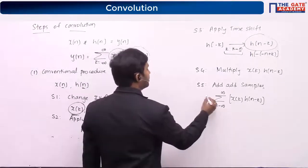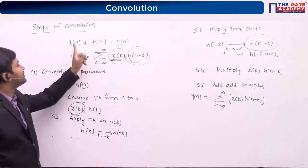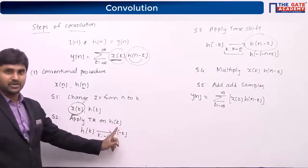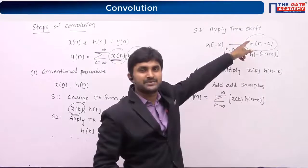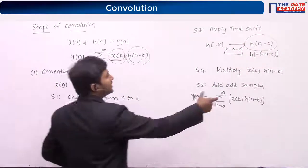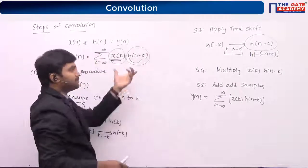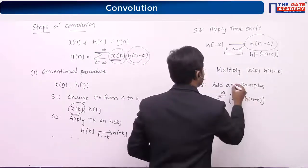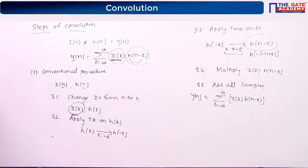To recap: step 1 is changing the independent variable from n to k; step 2 is applying time reversal on h of k to get h of minus k; step 3 is applying the time shift to get h of n minus k; step 4 is multiplication of x of k and h of n minus k; and lastly step 5 is to add all the samples. This is the conventional procedure.